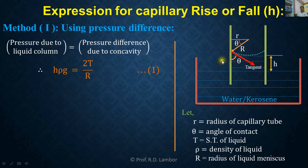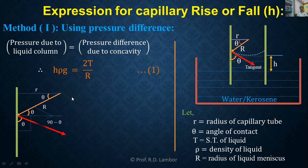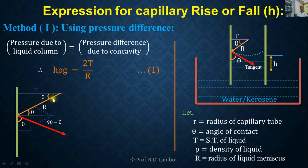From the diagram, the wall of the capillary, the radius of the capillary tube r, and the radius of curvature of the meniscus R form a triangle. The tangent drawn to the liquid meniscus and the radius of curvature make a 90-degree angle with each other, and the wall of the capillary also makes a 90-degree angle.